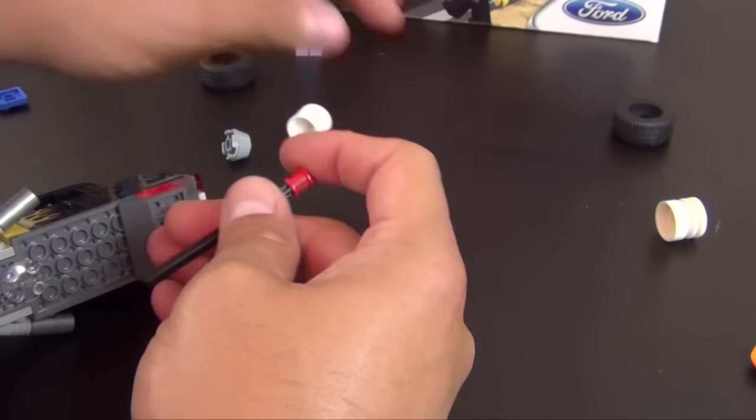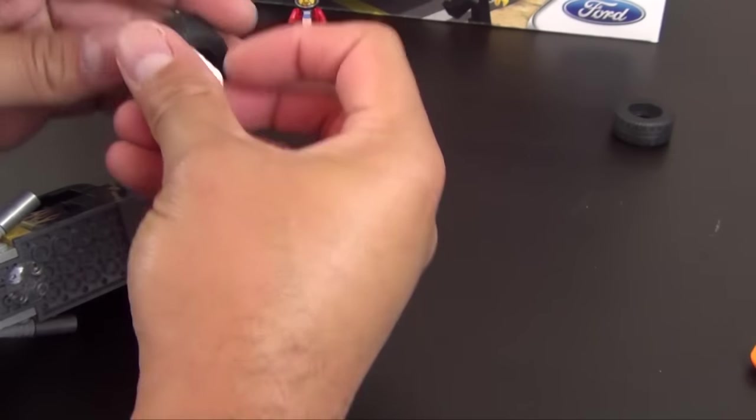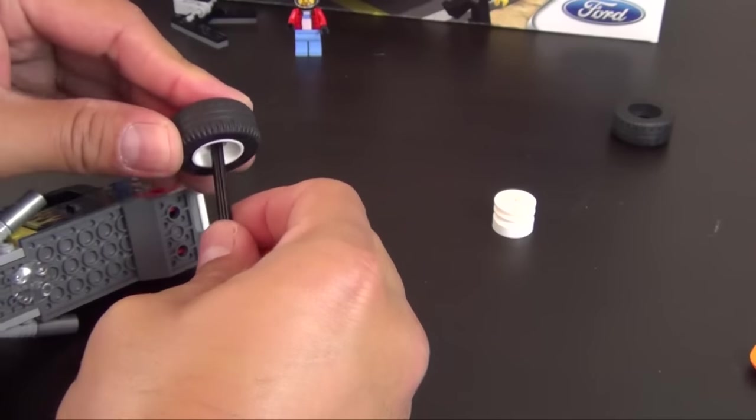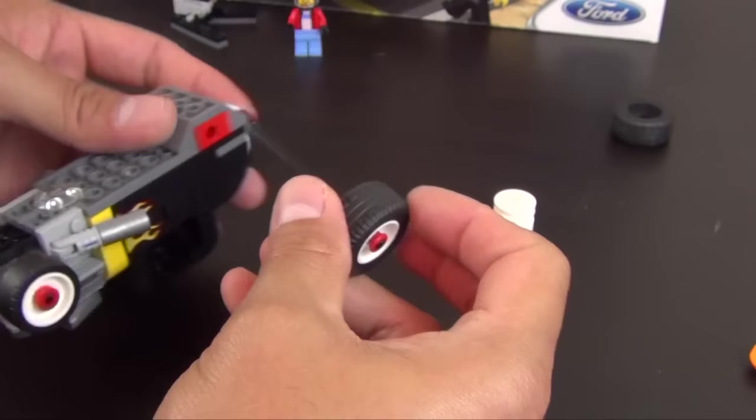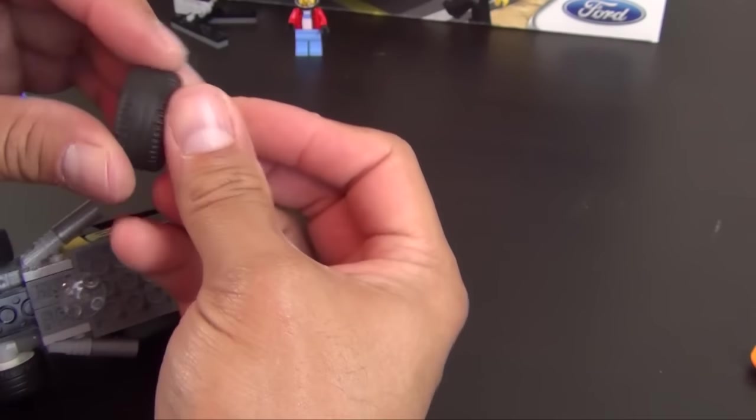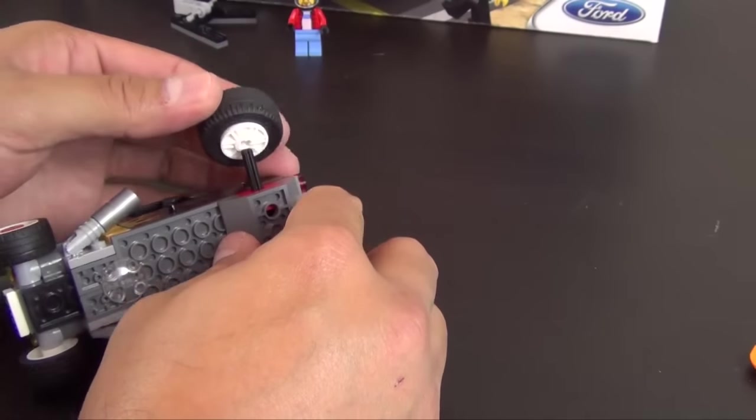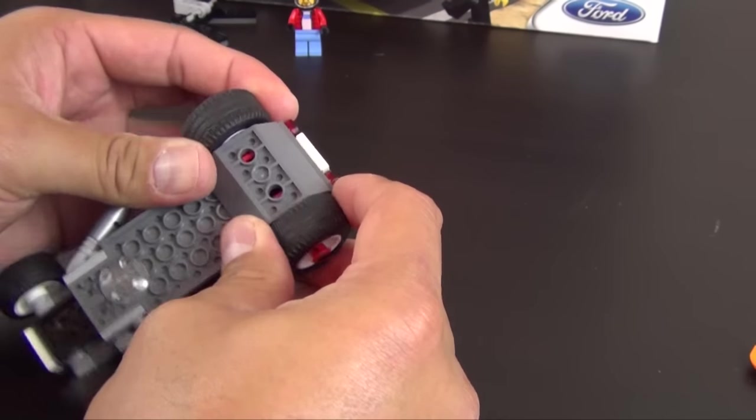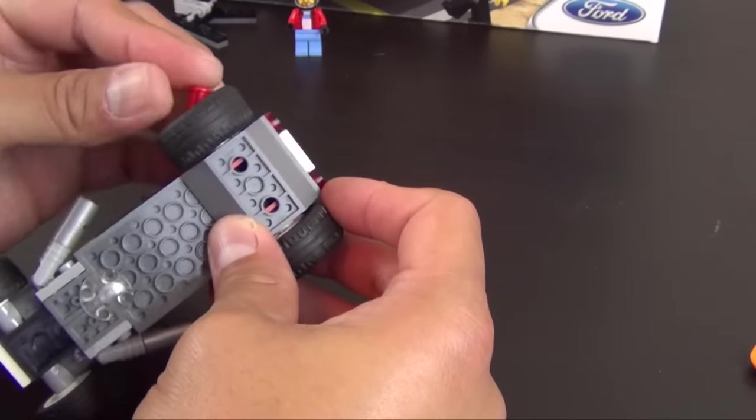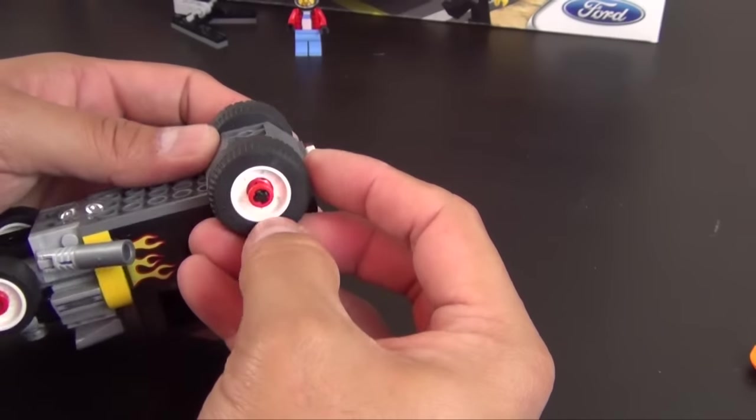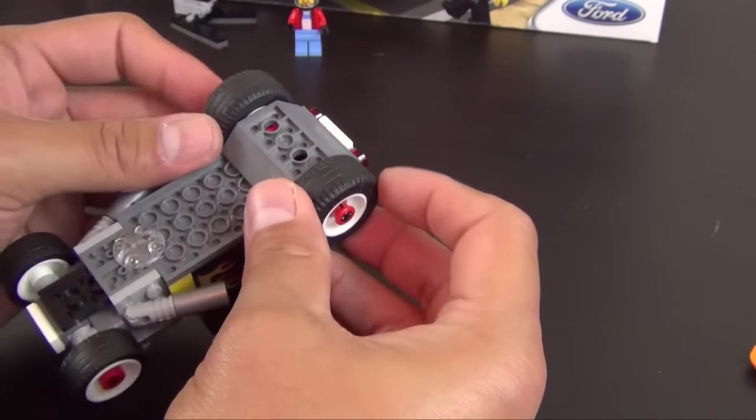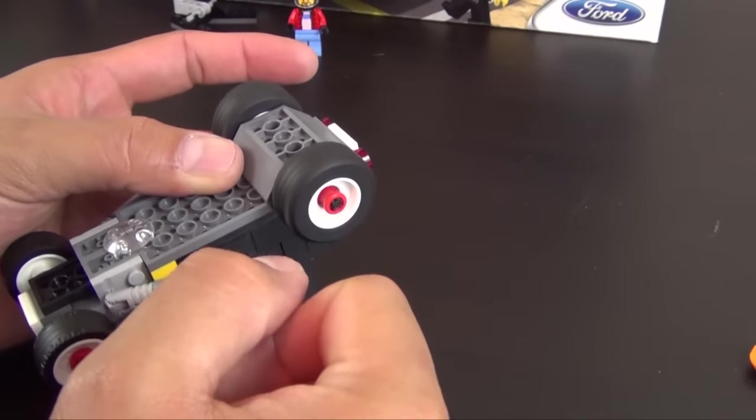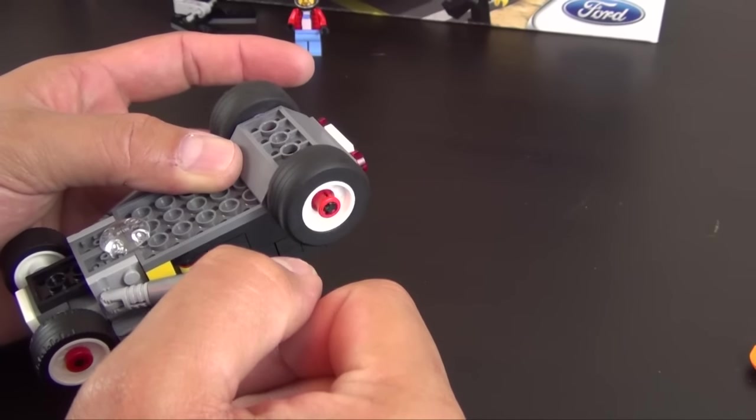Now we have some technic bricks. We have a red bushing on this axle. Slide these wheels and tires together. That goes in there, slide that all the way through. Next wheel and tire, let's make sure we get it all the way on there. I'm going to pull it apart just a little bit, give it a little bit of room in there to move around.